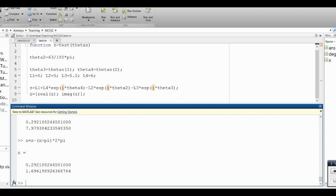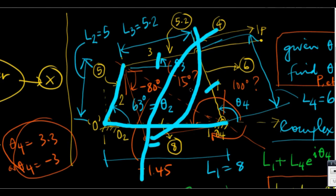Once I have theta_3 and theta_4, I know this point because I know theta_2, then from there I know theta_3, so I can extend that line and find the location of the coupler point. Now let us do a velocity problem.